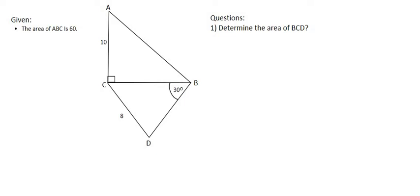In this question, we are told that the area of the top triangle, which is ABC, is 60. The final question wants us to determine the area of BCD.